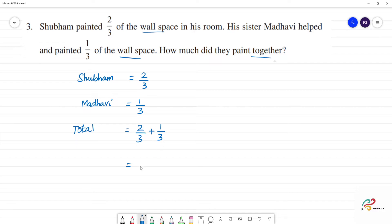We can see that the denominators, 3 and 3, are the same. So we can add 2 plus 1, which is 3. So, 3 by 3, which is the same as 1 whole number.